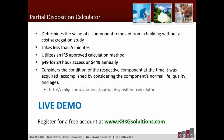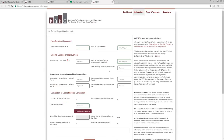The next software tool I want to demonstrate is called our Partial Disposition Calculator. This allows you to determine the value of any component removed from a building without doing a cost segregation study, and it works for any type of building of any size — even a $100 million commercial building. The calculator takes five minutes or less to use, is fully supportable, and uses an IRS-approved calculation method. To get there, go to KBKG Solutions and under the Calculators tab, select Partial Disposition Calculator.